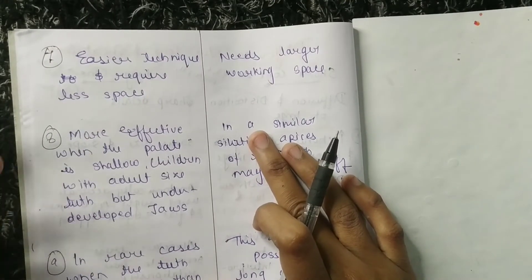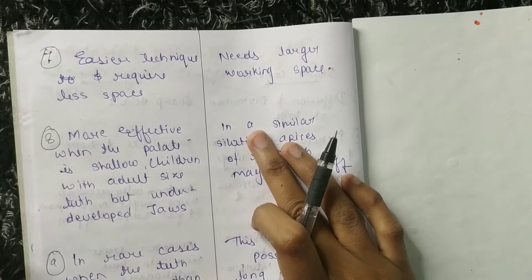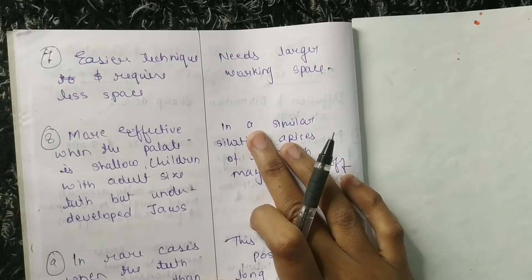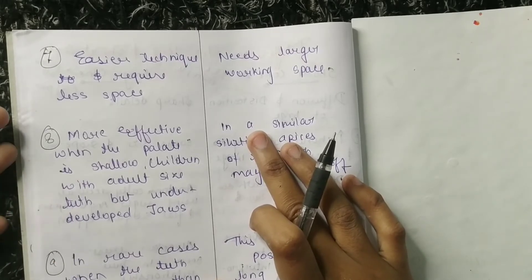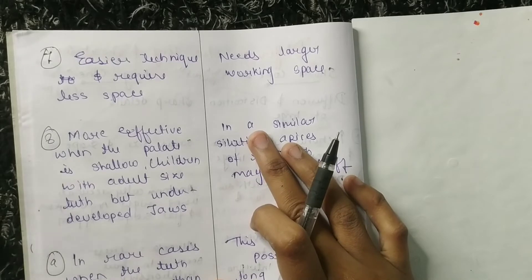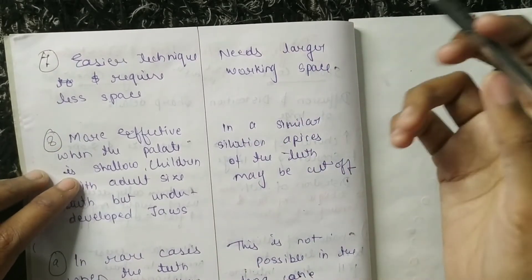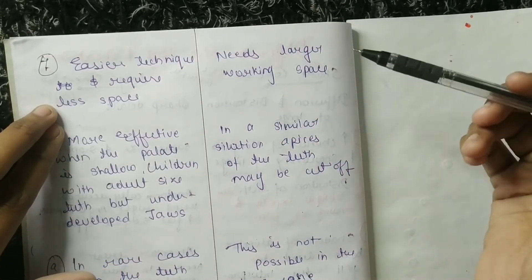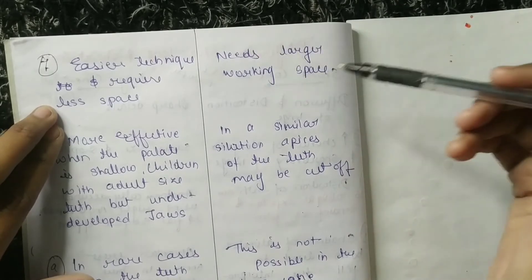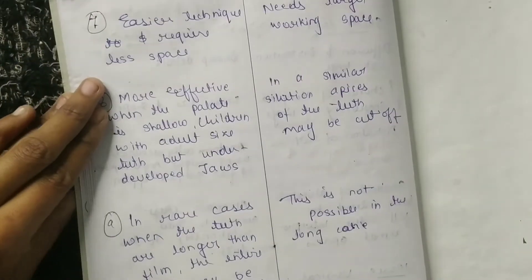The seventh difference: bisecting or short cone technique is an easier technique and requires less space. However, the disadvantages include shadows of the alveolar crest, shadows of the zygomatic process, distortion of image, and distortion of teeth. Long cone technique needs a larger working space because it follows all projection principles except the third.